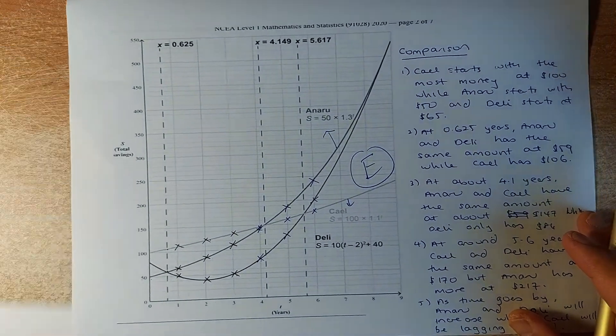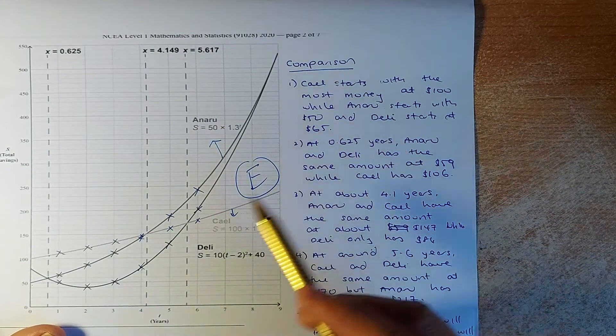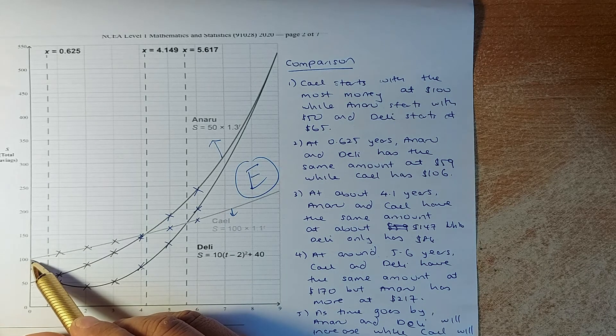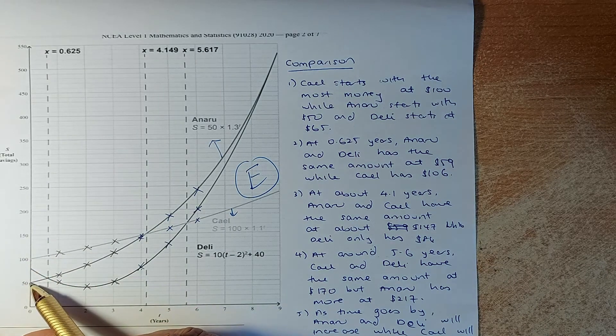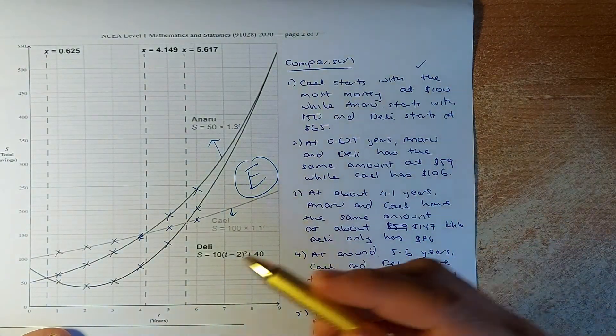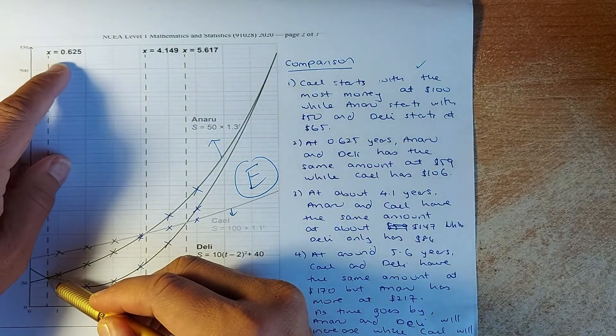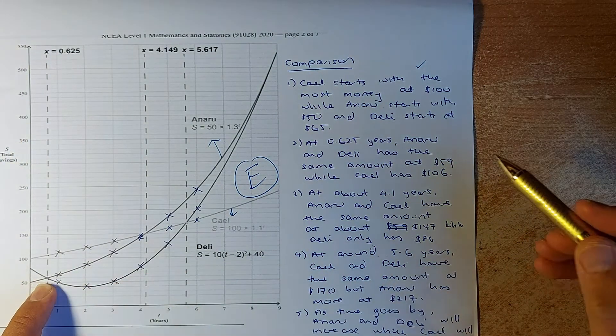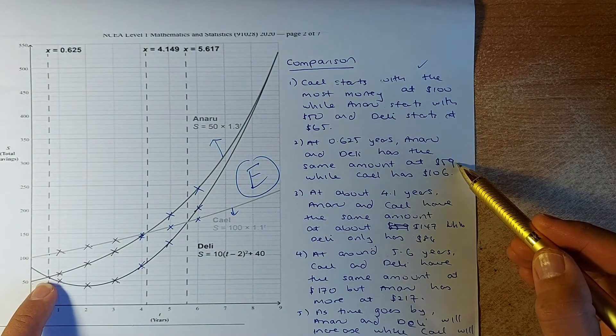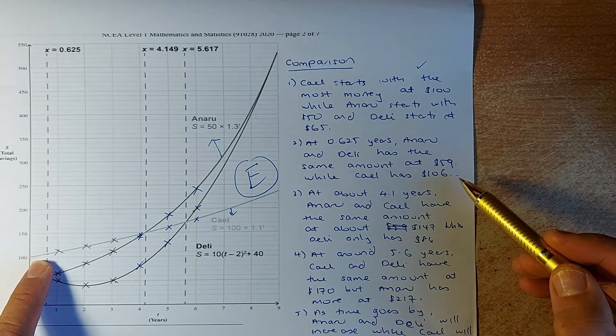So once you have done that, we have the three graphs of Anaru, Kale, and Deli. So the next question asks you to compare the three graphs together. So we have made the decision to compare. So the first thing we look at the starting point. So the starting point, Kale has the highest amount at 100, while Anaru starts with 50 and Deli starts at 65. So that will give you one valid point. Next, we are going to compare when are they going to meet. So we have found out that this point here, at 0.625 years, you can see that Deli and Anaru have the same amount. So they meet at this point. So they have the amount at 59 while Kale has a higher value at 106.